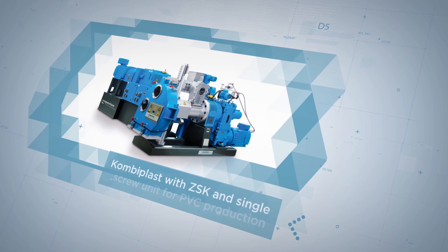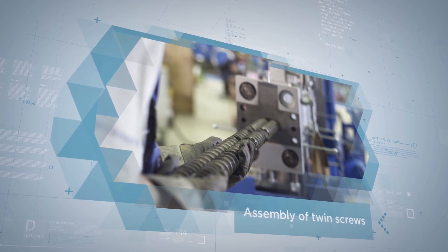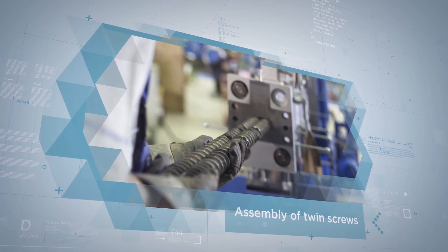To date, Coperion, a Hillenbrand Inc. company, has produced more than 14,000 twin-screw extruders for a wide variety of applications in the plastics, chemical, food, and pharmaceutical industries.